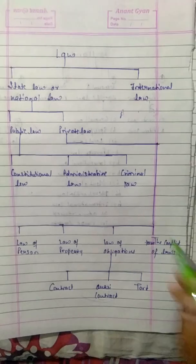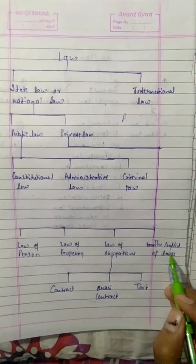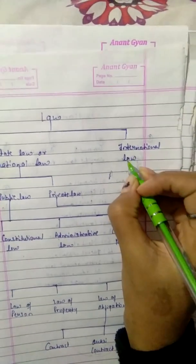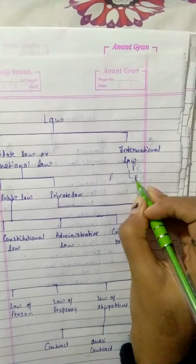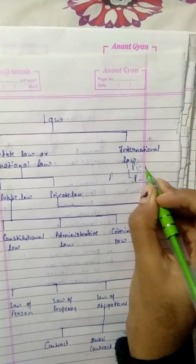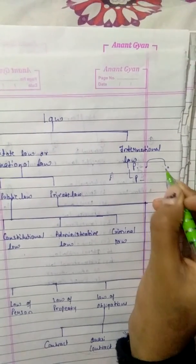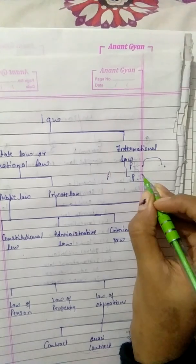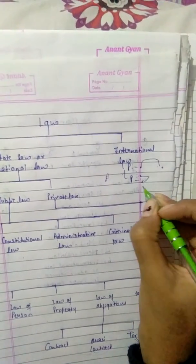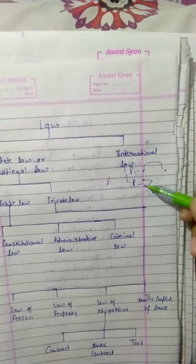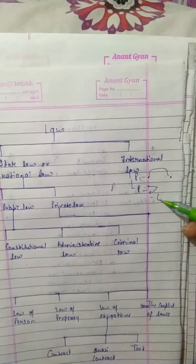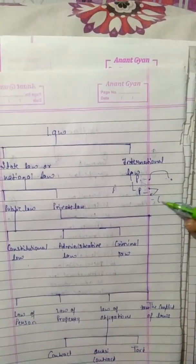In our second year we will study conflicts of laws. Conflicts of laws are of two types of international law: one is public international law, which deals with relationships between two countries and other countries, and the other is private international law — for example, if an agreement was made in the US and Switzerland, the rights and duties of those countries according to the law is called private international law.